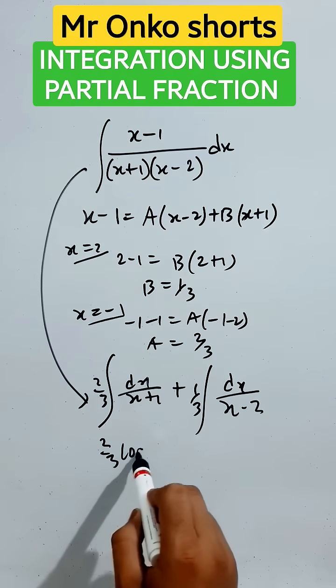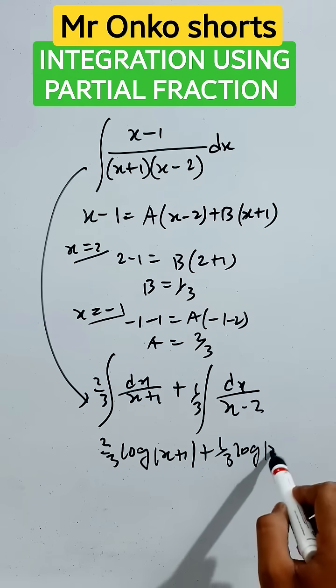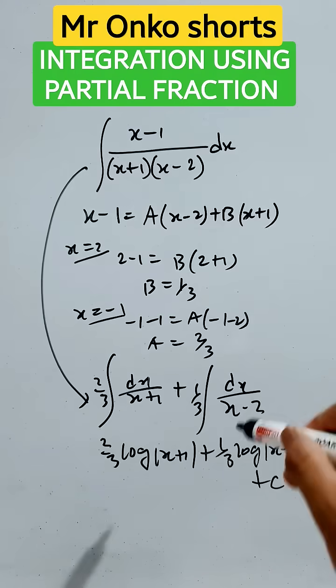So it will be 2 by 3 log mod x plus 1 plus 1 by 3 log mod x minus 2 plus c is the answer of this question.